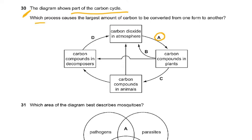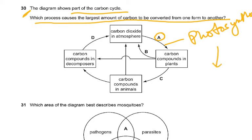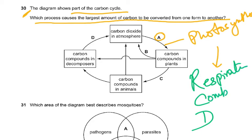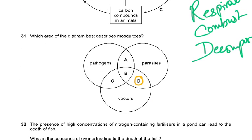Question 30: the diagram shows part of the carbon cycle. Which process causes the largest amount of carbon to be converted from one form to another? Carbon dioxide in the atmosphere to carbon compounds, this is photosynthesis. This is the biggest process. Photosynthesis is equal to three things: respiration, combustion, and decomposition. Photosynthesis was the major amount of carbon to be converted from one form to the other, carbon dioxide to glucose. The rest is returning carbon dioxide to the atmosphere. Combustion is burning fossil fuel, and decomposition is where dead organic matter is decomposed and carbon dioxide is returned to the atmosphere.